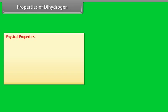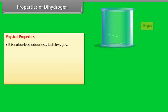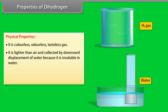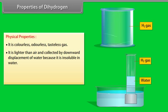Properties of dihydrogen. Physical properties: It is colorless, odorless, tasteless gas. It is lighter than air and collected by downward displacement of water because it is insoluble in water. It is highly combustible. It is the lightest of all elements.